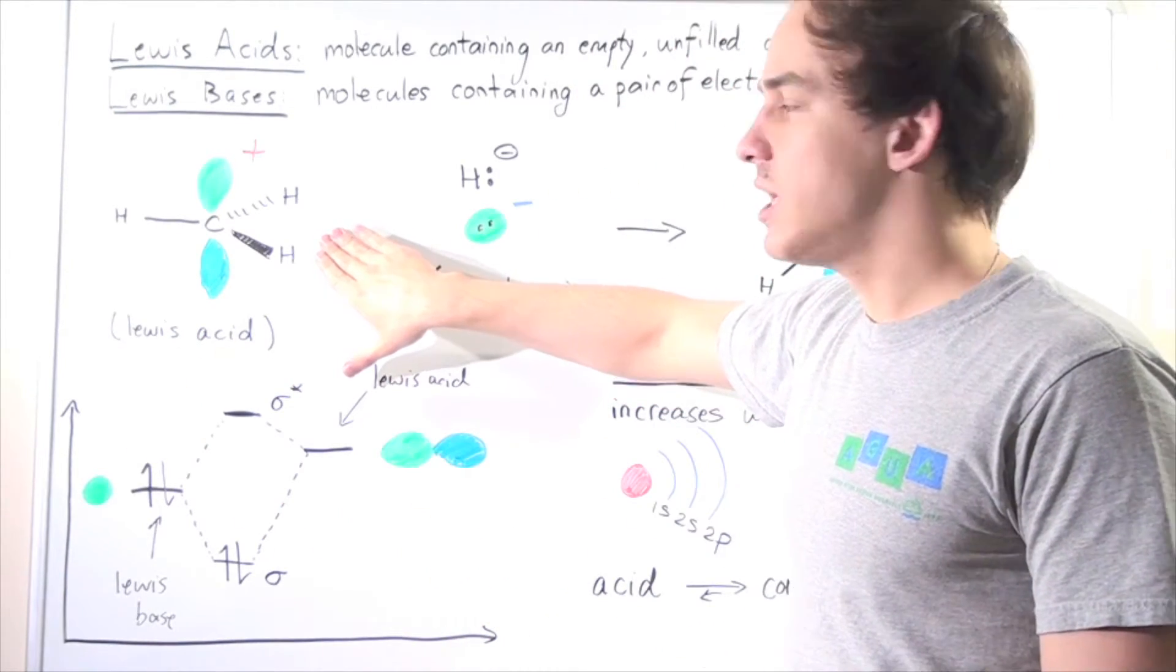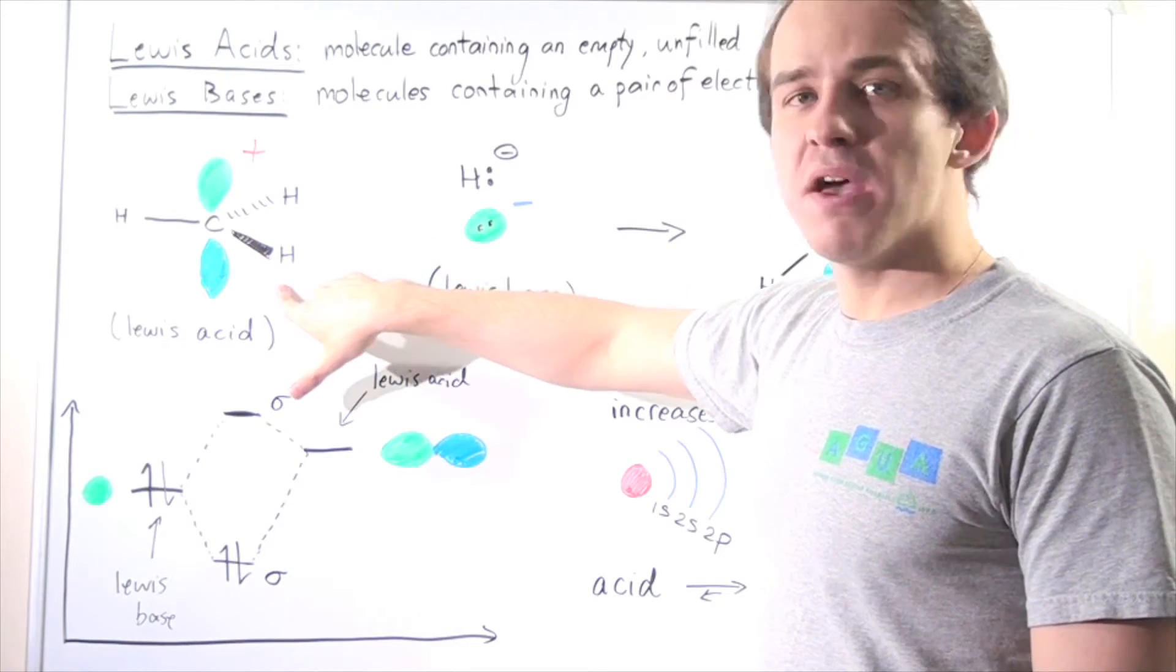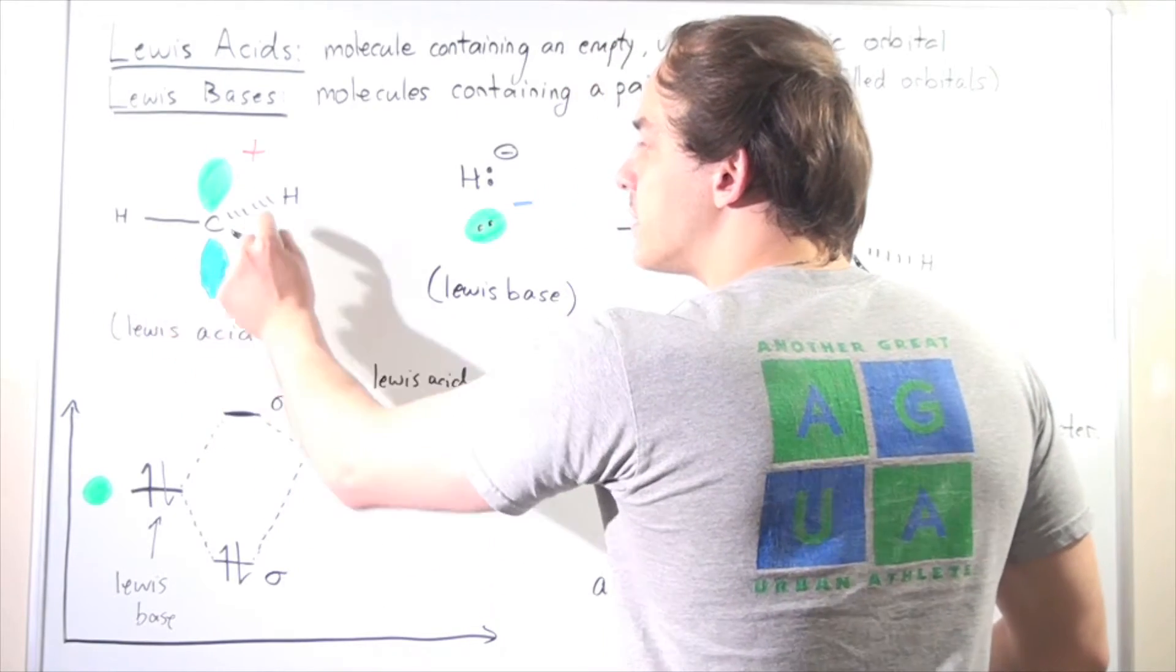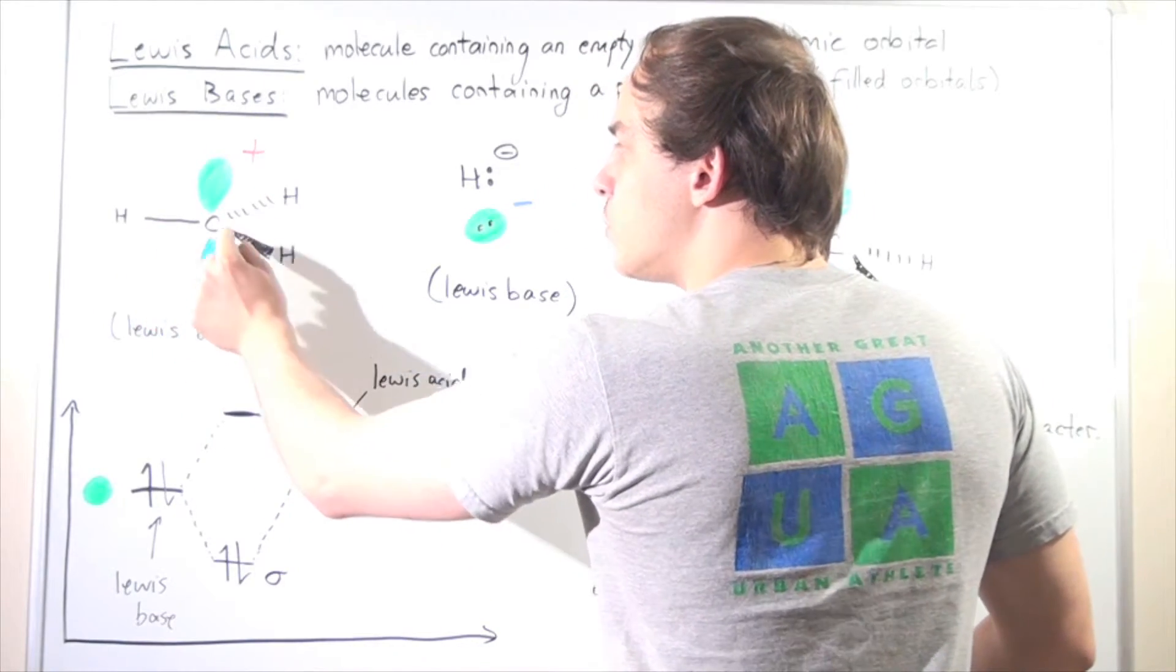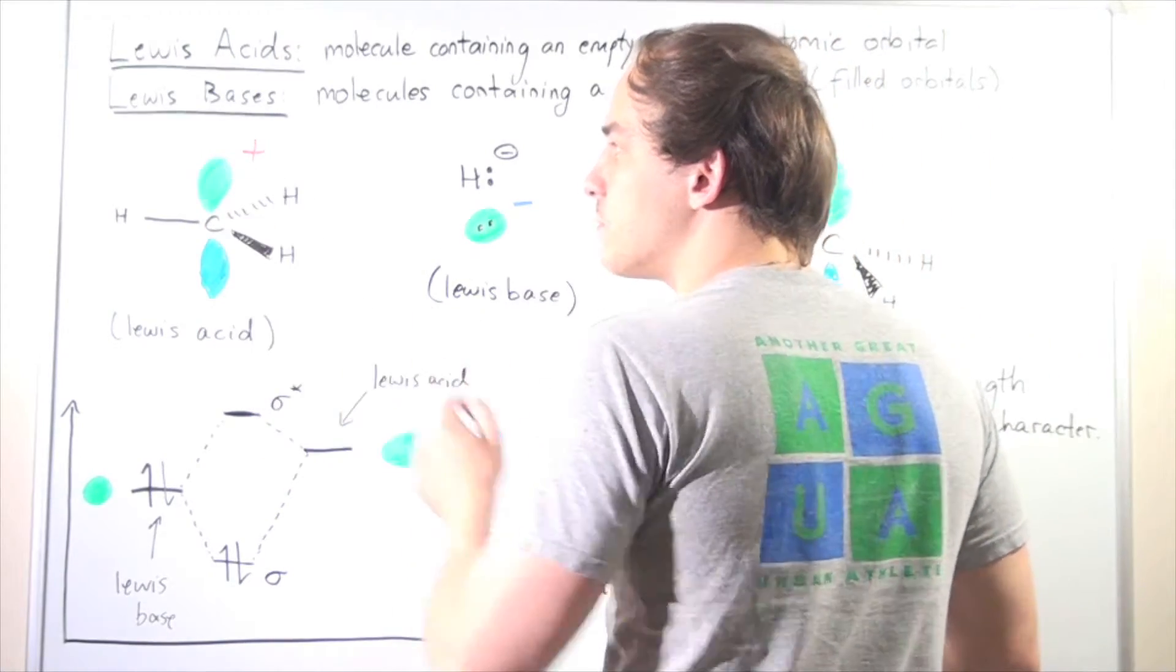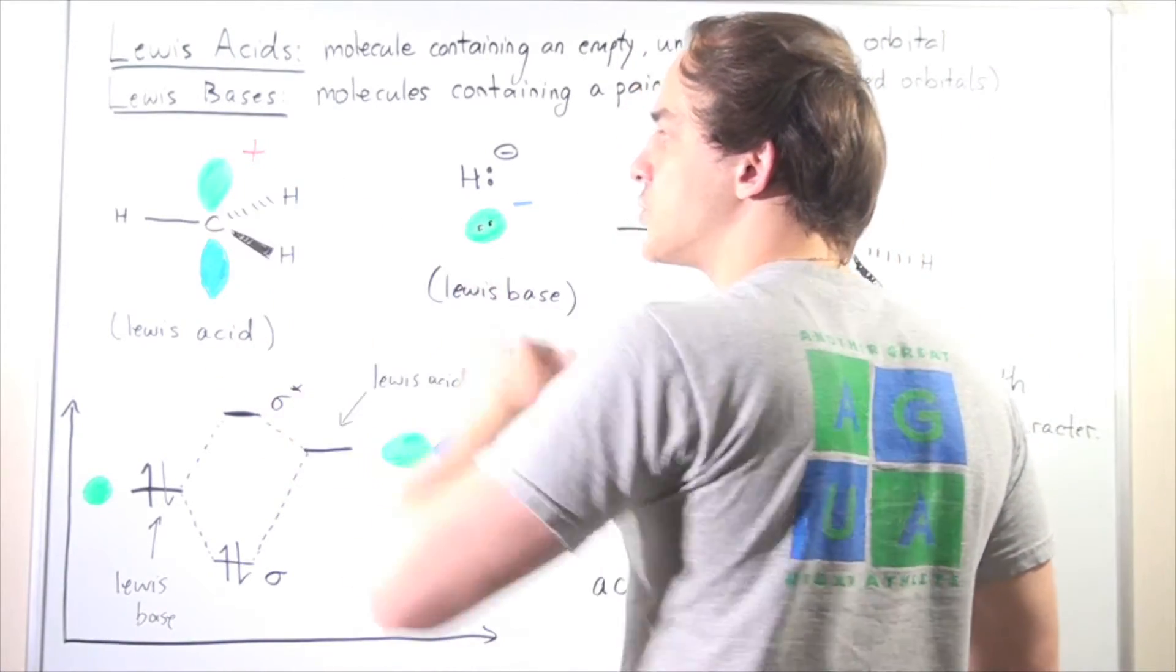This is one example of a Lewis acid. It's a methyl cation. This methyl cation has three sp2 hybridized covalent bonds between the C and the Hs, and it has an empty pure 2p orbital given here. So it has a positive charge.